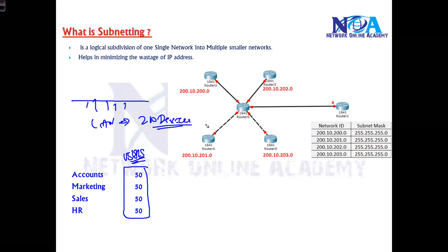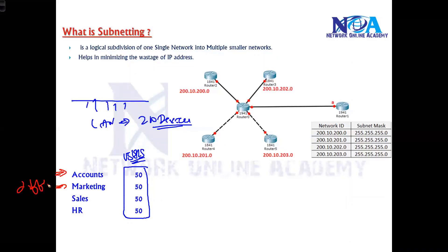Once we do the physical connection, the next step is to assign IP addresses. We decided to assign IP addresses and also decided that each department should be in a different network, because we don't want communication to happen between these four departments. Logically, we want to separate them into four different networks, even though they are physically on the same LAN. So we need to go with IP addressing.